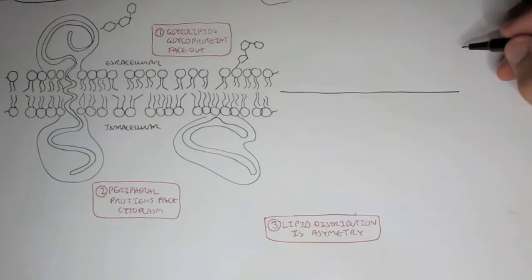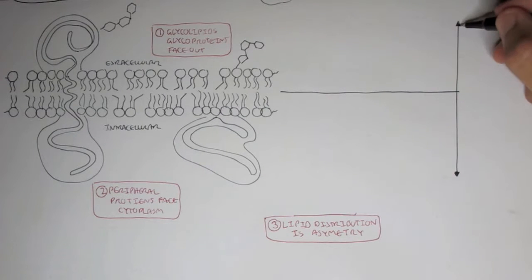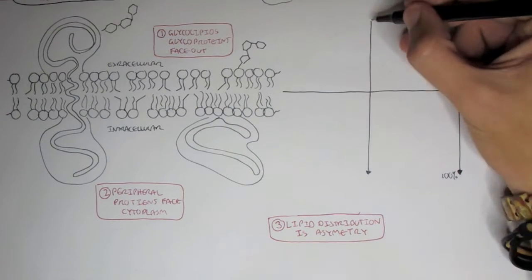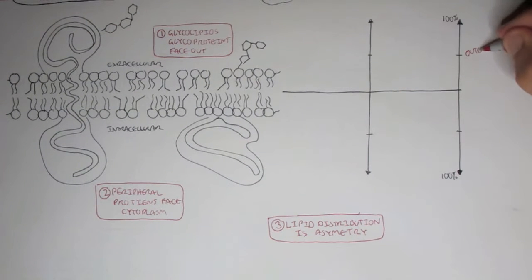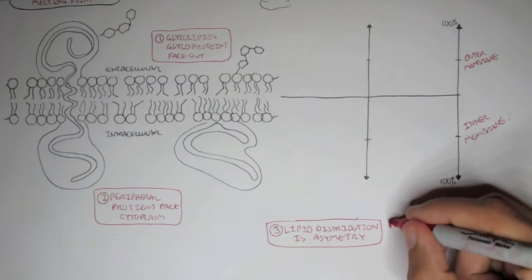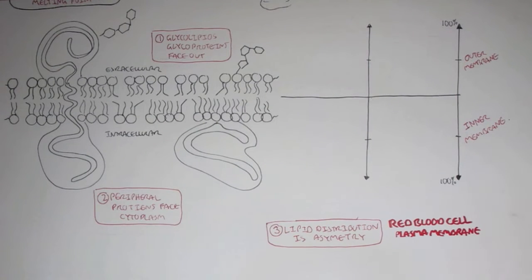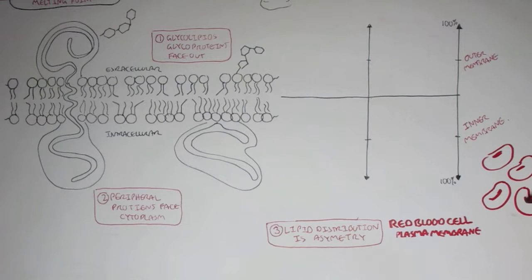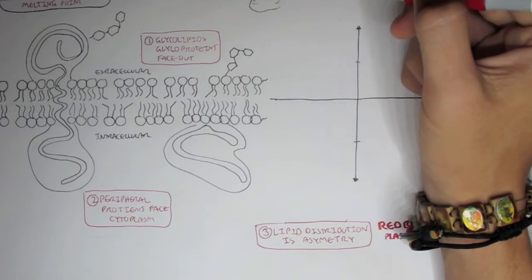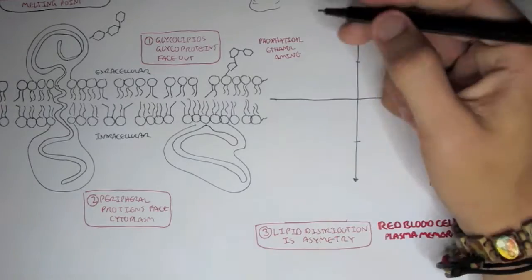Going back here again, number three, there's lipid distribution. The lipid distribution is asymmetrical. So to portray this example, I'll draw a graph here. We have a scale 100% on the top, which composes the outer membrane, and 100% to the bottom, which composes the inner membrane. For example, this is a red blood cell plasma membrane. Let's look at the different components in the red blood cell plasma membrane, like the phosphoglycerides, and how much is composed on the outer membrane and the inner membrane.